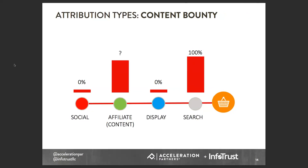Content bounty — social influencers are really hot right now. You might read a blog and then later make a purchase through a different channel. There are different types of attribution models, one called a content bounty, where you give a content partner or blogger a flat fee — say $10 — because that content partner helped close the sale. But then in this situation, search gets the full last click.